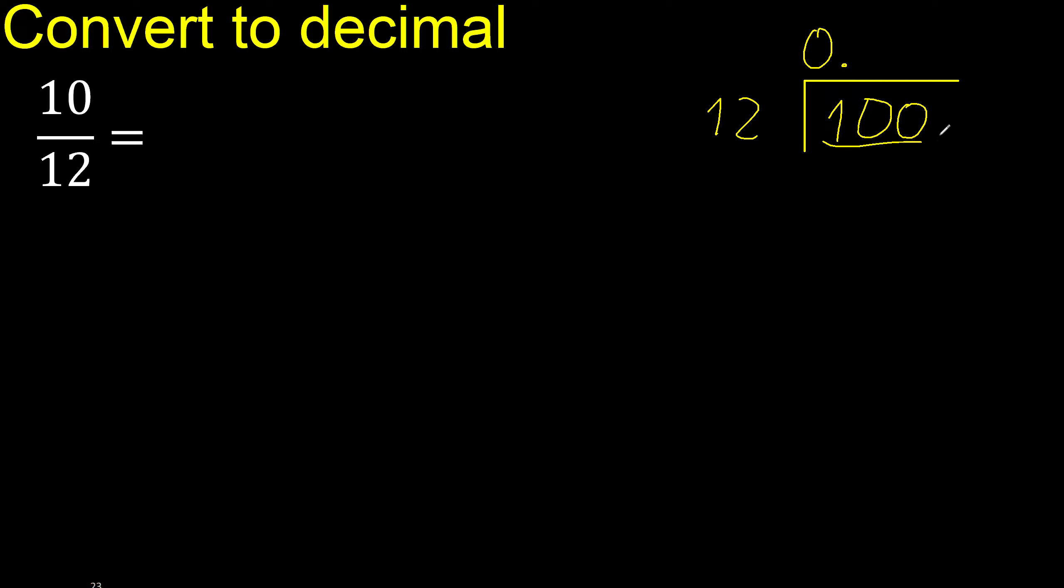100 is not less. Therefore, with 100, 12 multiplied by which number is nearest to 100 but not greater? 12 multiplied by 9 is greater. Multiply by 8. 96 is not greater.